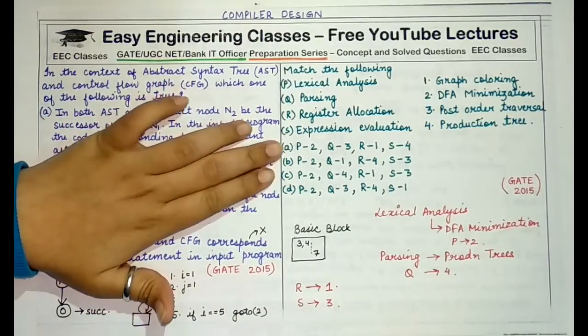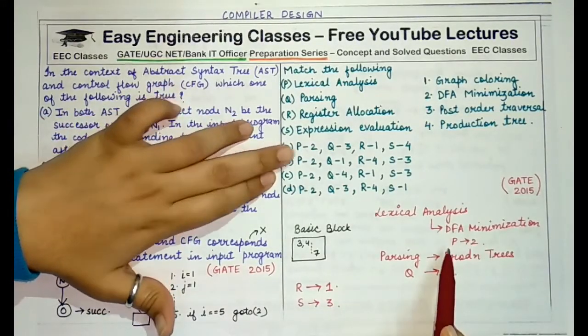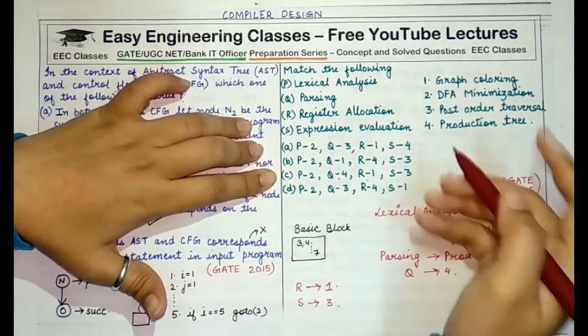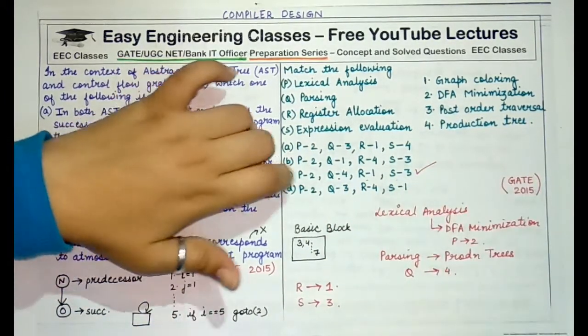So the correct option out of all these A, B, C, D: P maps to 2, Q maps to 4, R maps to 1, and S maps to 3. So C is the correct option.